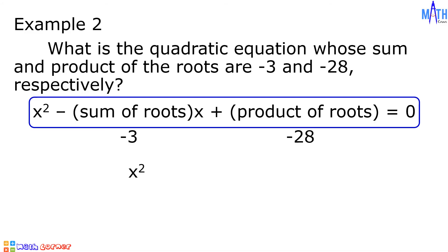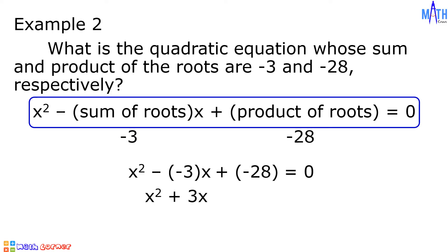We have x squared minus negative 3 times x plus negative 28 equals 0. Simplifying, negative 28 becomes minus 28, and the quadratic equation is x squared plus 3x minus 28 equals 0.